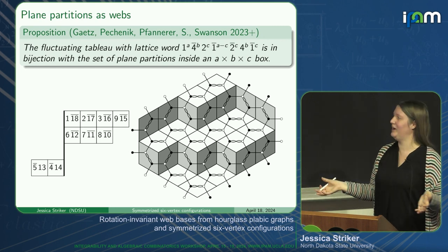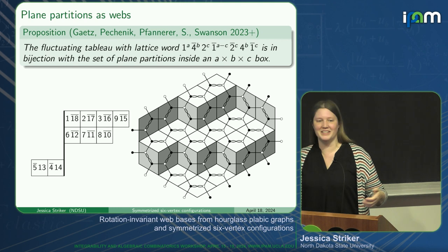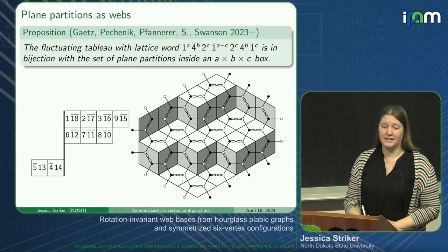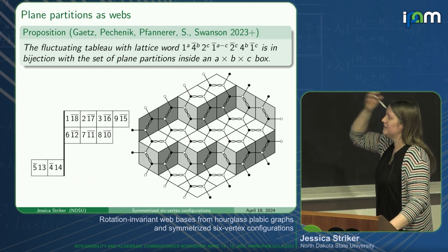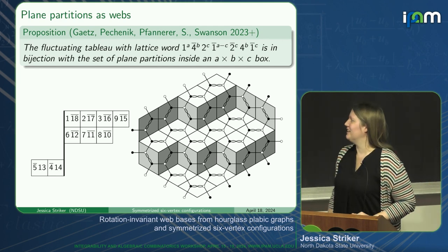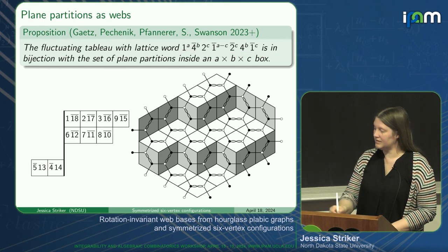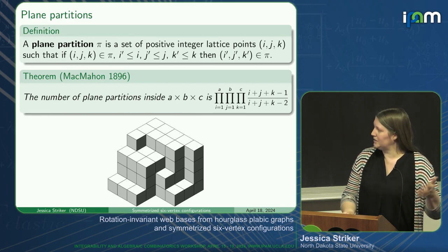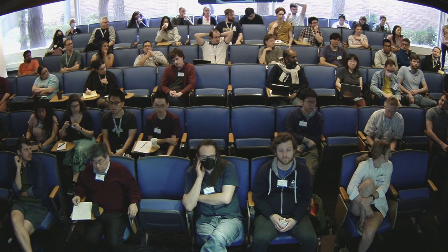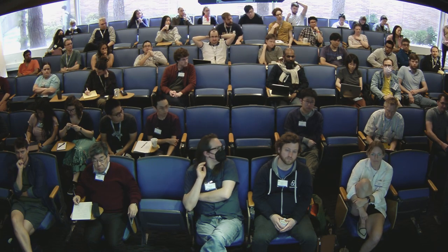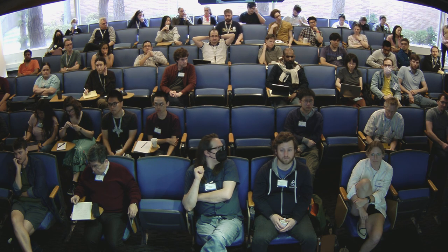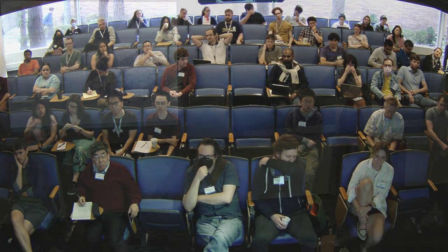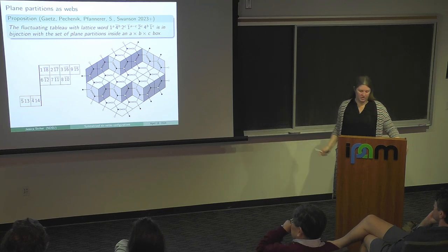Also, plane partitions are webs. Here's a plane partition with the web drawn on top, which directly looks like a regular dimer cover. And here's the tableau that goes with it—with the set of all plane partitions. So we needed these weird fluctuating tableau. We can write down what the lattice word is around the boundary. The question about what happens when you rotate this web is a great one: you do promotion on that tableau. I think we picked the representative of this promotion orbit that looks the nicest in terms of dimer cover.